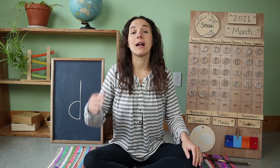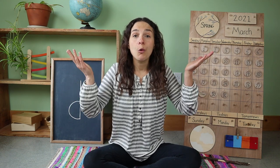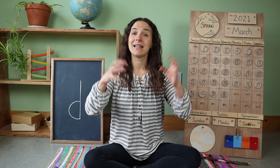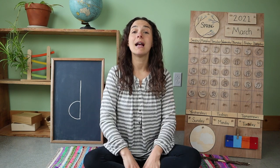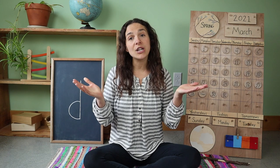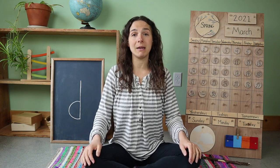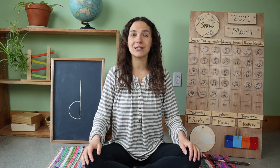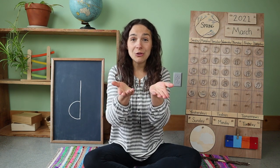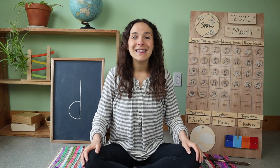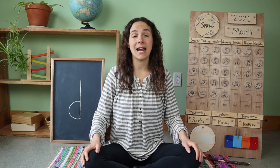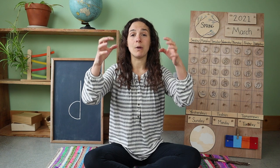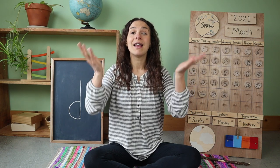Now that we've gone over the letter of the week and the number of the week, we have a brand new sign to learn this week. I'm going to teach you how to say 'rain' in sign language. Remember, sign language is a language that uses hand gestures and facial expressions to communicate instead of speaking out loud. This is how you say rain in sign language — watch carefully. When you say rain in sign language, you take both of your hands and spread your fingers apart, curl them slightly, and when you bring them down, that's how you say rain.